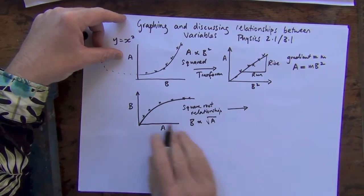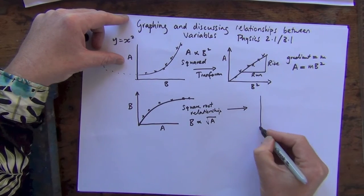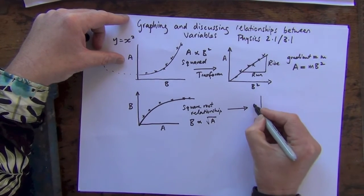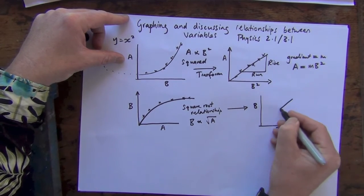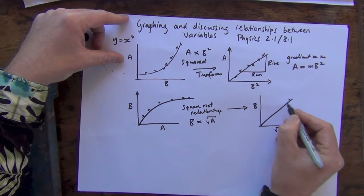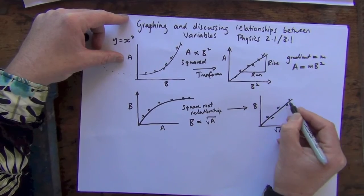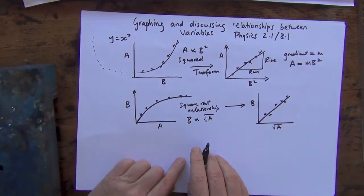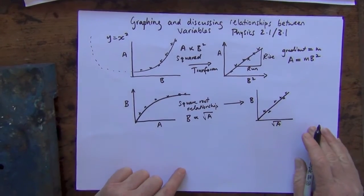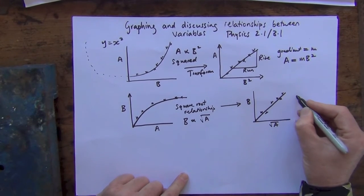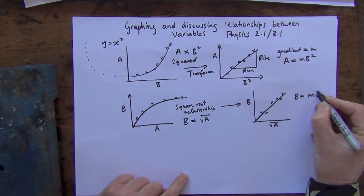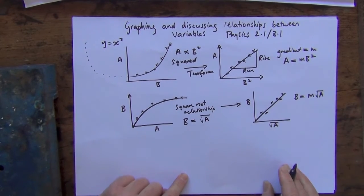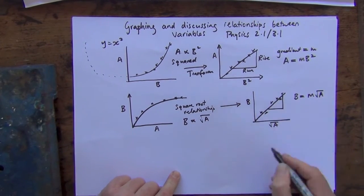And then if I transform this graph, B against the square root of A, again, I'd get the straight line, plotting those points there, and then the relationship between B would equal M versus the square root of A, rise over run being the M.